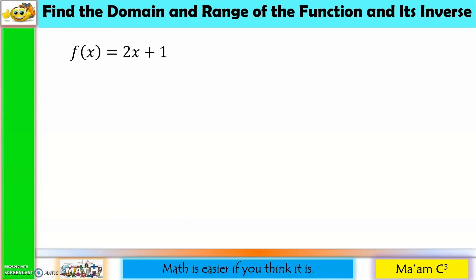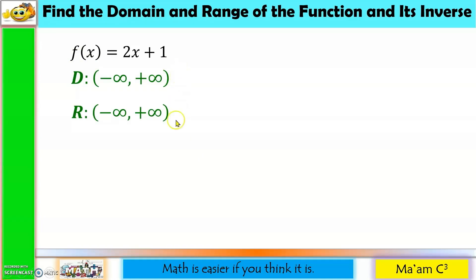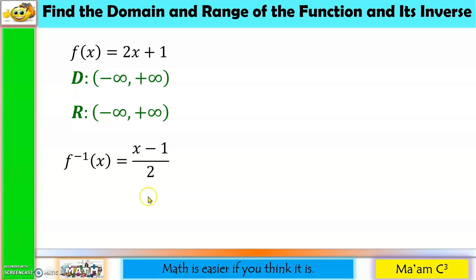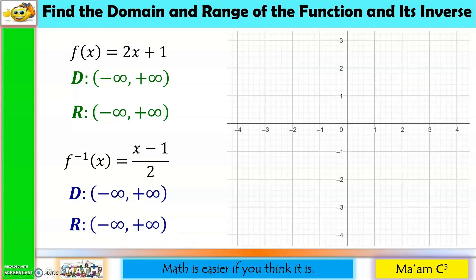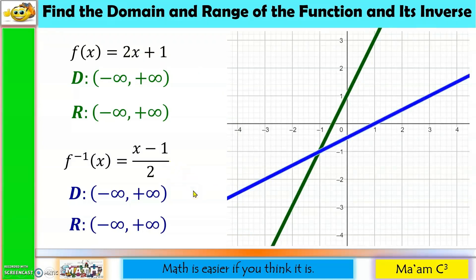Next example: f(x) = 2x + 1. This is a polynomial function, so the domain and range are both the set of all real numbers, written in interval notation as negative infinity to positive infinity. The inverse is (x − 1)/2, a rational function with a constant denominator, so its domain and range are also the set of all real numbers. Graphing both and drawing y = x confirms they are reflections of each other.